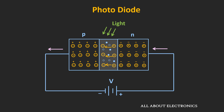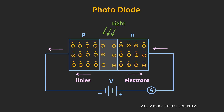The built-in electric field already exists in the depletion region. Due to this built-in electric field, the electrons will get attracted towards the positive terminal and the holes towards the negative terminal. Due to this electric field, they are able to cross the depletion region. Once they cross it, they get attracted by the external force of the applied voltage. If we connect an ammeter in the circuit, we can actually measure this photocurrent.